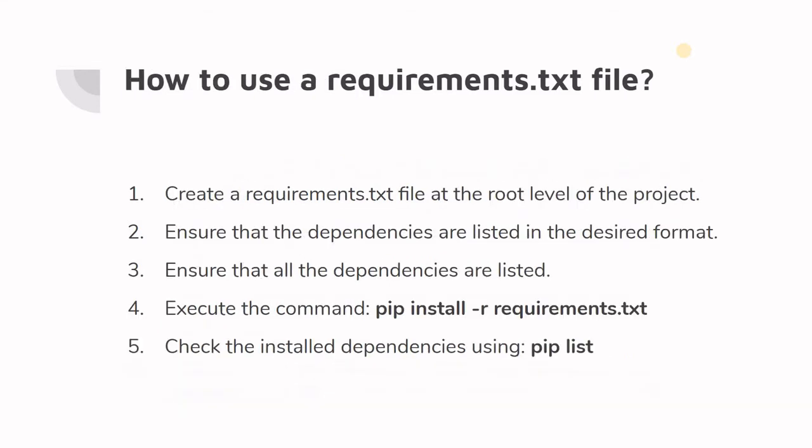Now let's look at how to use a requirements.txt file. The first step is to create a requirements.txt file at the root level of the project. Whenever you start a project, the best approach is to create the requirements file at the top-level, that is the immediate root folder of the project.